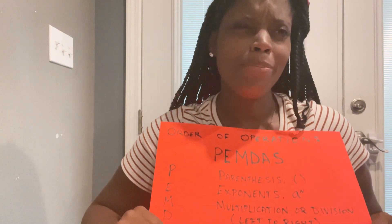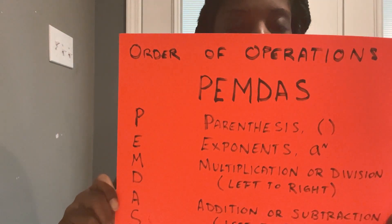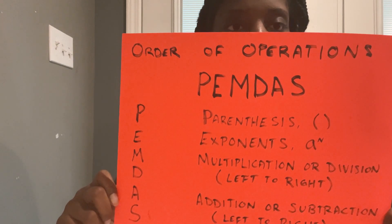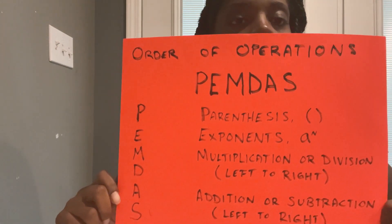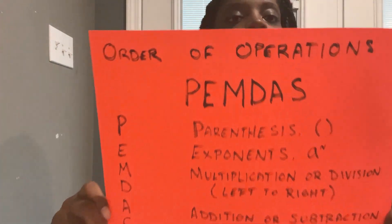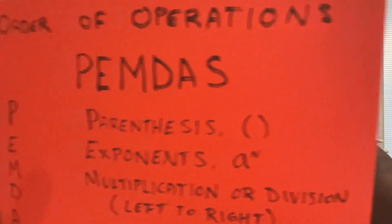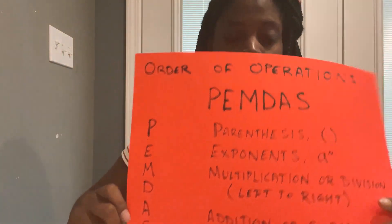Another thing you need to know — we learned this in middle school — please excuse my dear aunt Sally. That stands for: parentheses first, then exponents, then multiplication or division left to right, then addition or subtraction left to right. This is what you need to know in order to solve multiple equations.